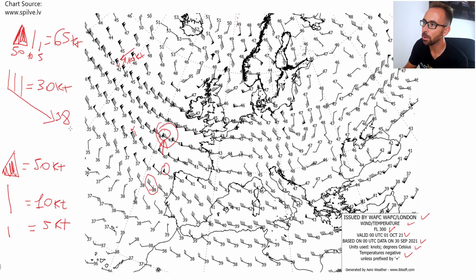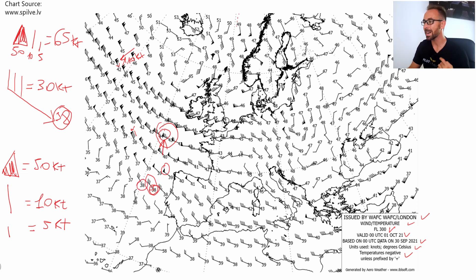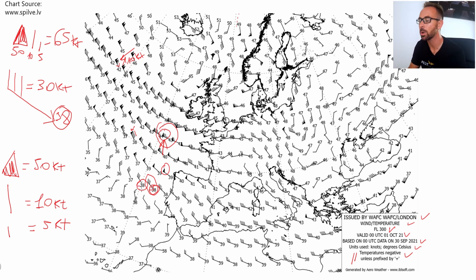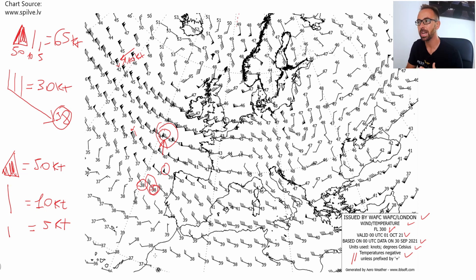Then we've got this number — 38 in this case. As we read at the beginning, temperatures are negative unless prefixed by plus. So that means the temperature is minus 38 degrees Celsius. In this position the temperature is minus 38, and the wind has got an intensity of 30 knots.